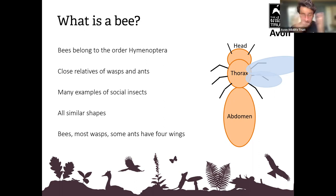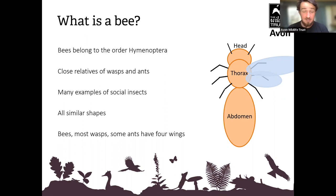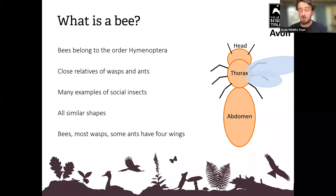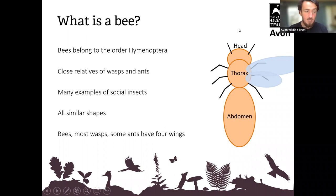Bees belong to an order of insects called the Hymenoptera — the same order which also includes wasps and ants. That throws a lot of people when you first tell them, but it's absolutely true. All insects have the same basic body plan: a head, a thorax in the middle where the legs and wings are attached, and the abdomen at the back. The Hymenoptera are pinched in quite a bit — they've got quite a skinny little waist.